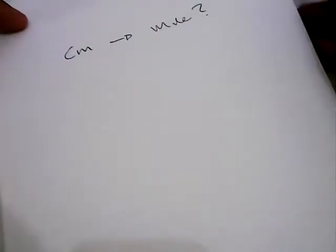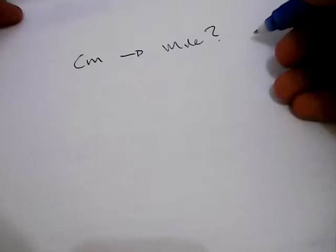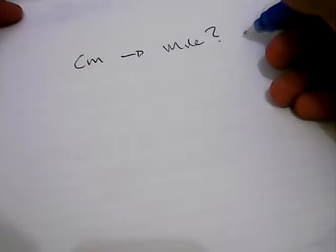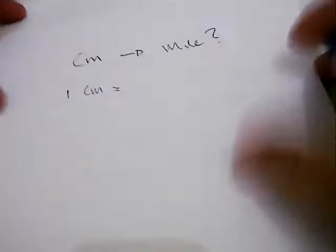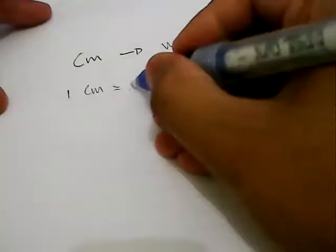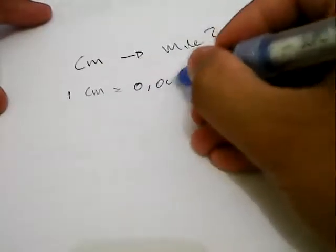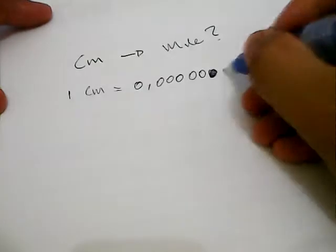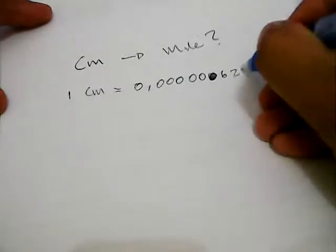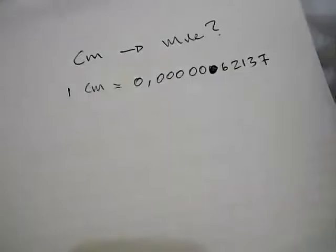Hello, what's going on everyone? Today we're going to learn about how to convert centimeters into miles. The first thing you need to know before converting is that one centimeter is equal to 0.0000062137 miles.